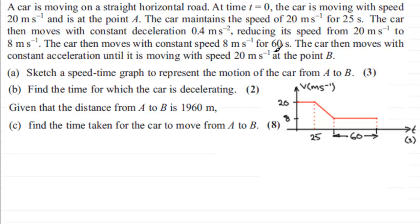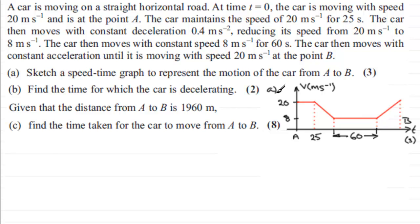Then we're told the car moves with constant acceleration until it is moving with a speed of 20 meters per second at point B. So the graph comes up to 20 meters per second, and we drop a dotted line down there. That's our complete graph representing the car going from point A to point B. Dividing this up into various sections will be very useful later in the question.